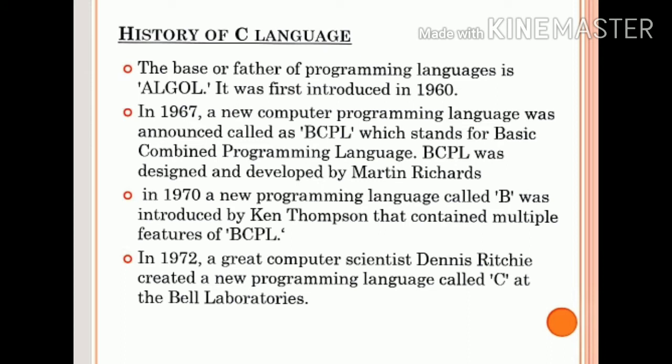Going into the history of C language: the father of programming language is Algol. It was first introduced in 1960. Algol means Algorithmic Language. In 1967, a new computer programming language was announced called BCPL.